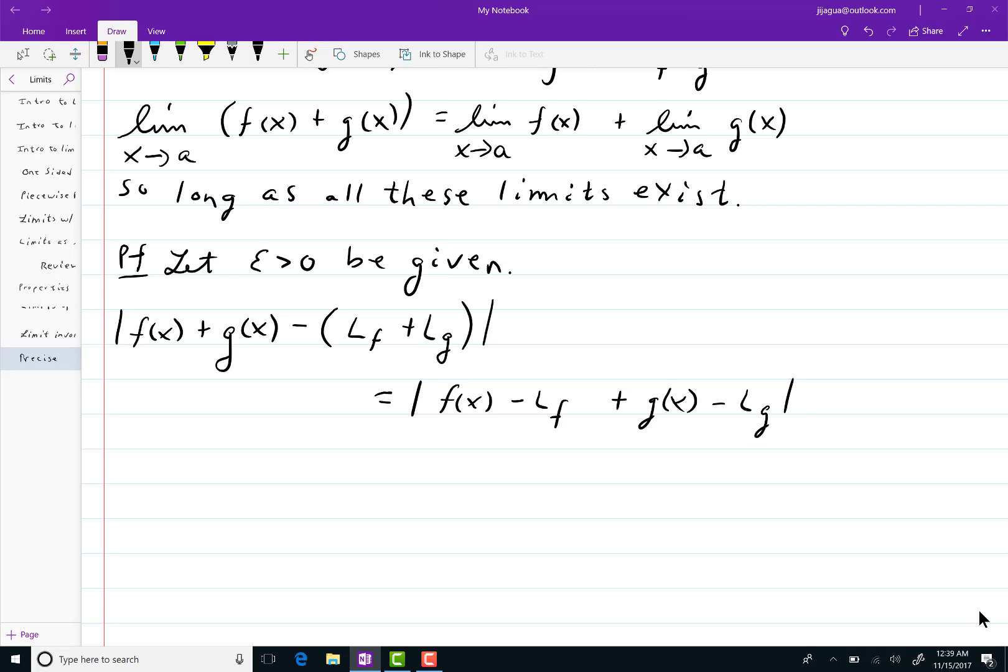I'm going to break this up according to the triangle inequality because I have that plus sign right there in the middle. This is going to be less than or equal to the absolute value of f of x minus l sub f plus the absolute value of g of x minus l sub g.